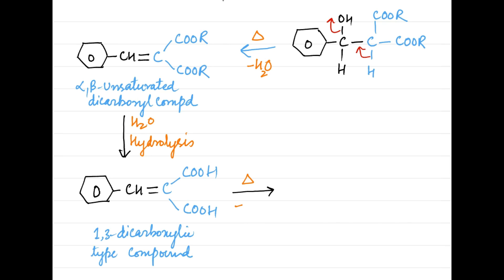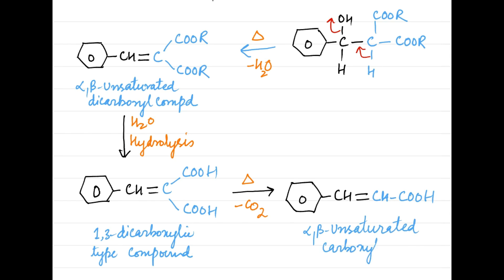This beta-hydroxy compound upon heating loses a molecule of water to form an alpha-beta unsaturated dicarbonyl compound, which upon hydrolysis forms an alpha-beta unsaturated 1,3-dicarboxylic acid. The 1,3-dicarboxylic compound upon heating loses a molecule of carbon dioxide to form an alpha-beta unsaturated carboxylic acid.